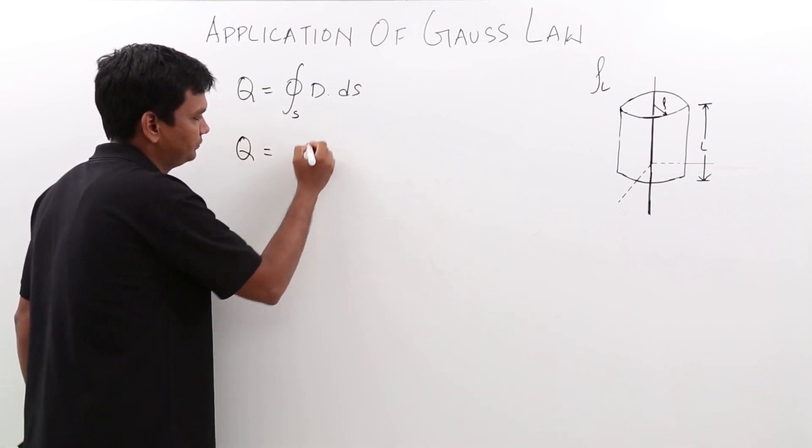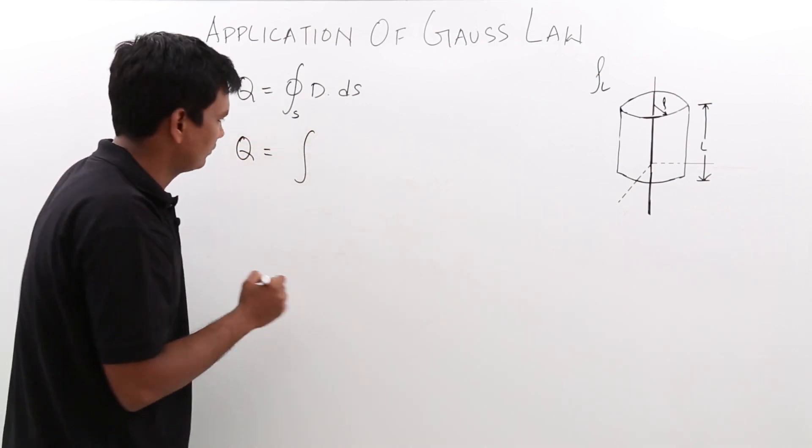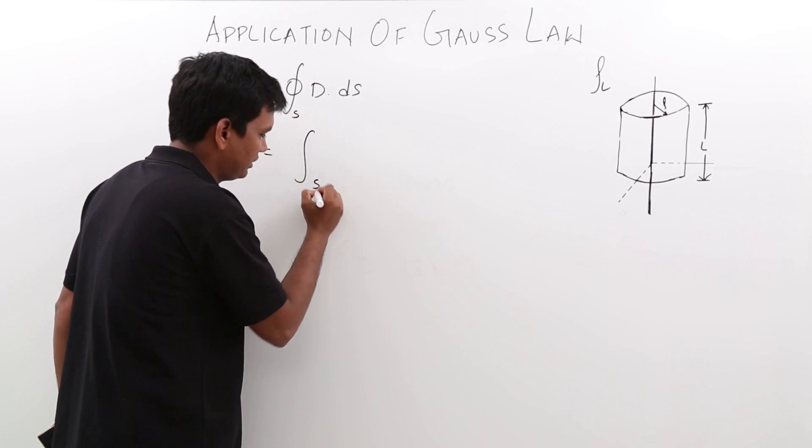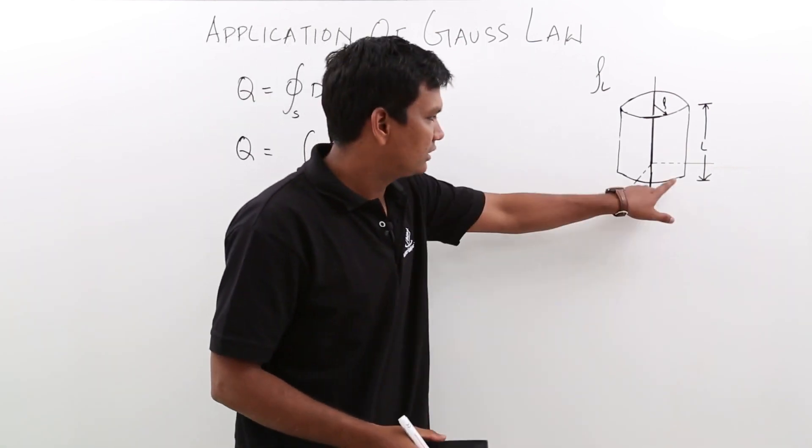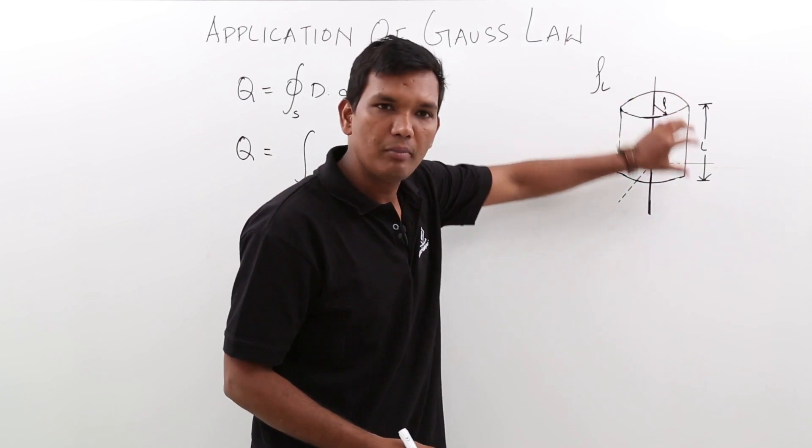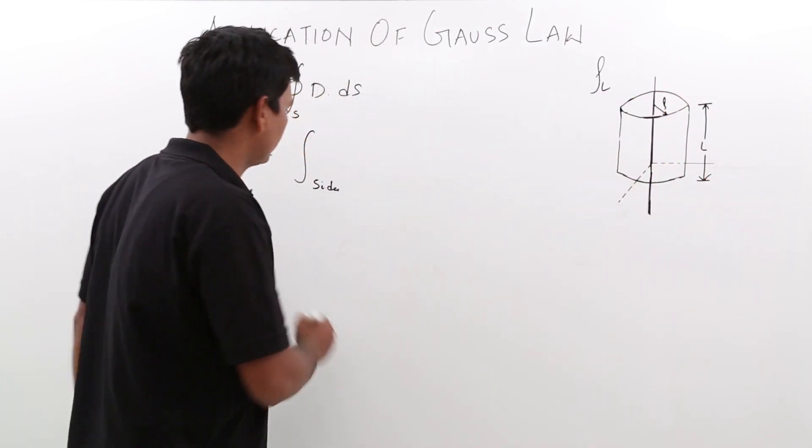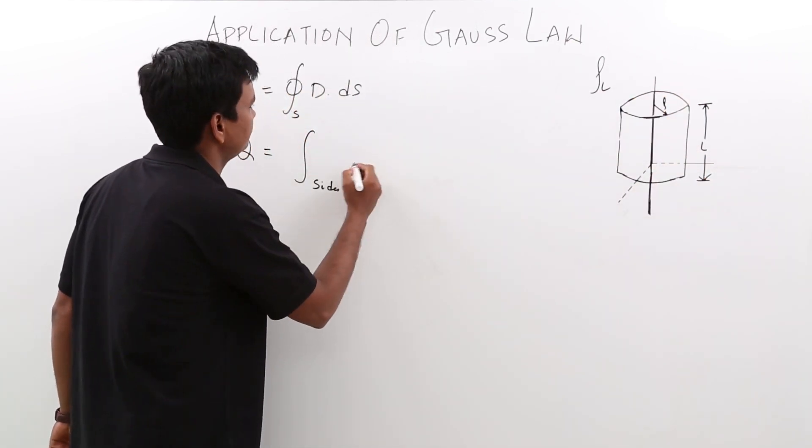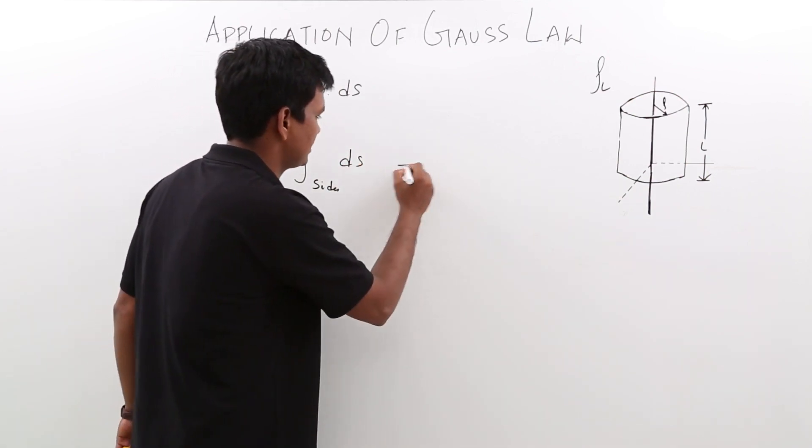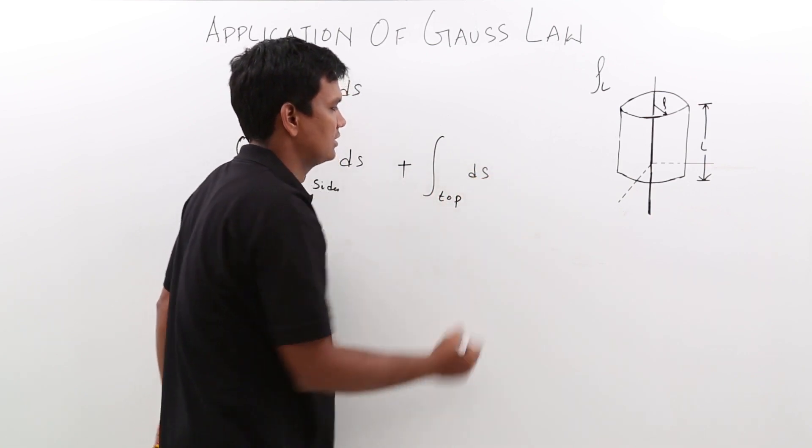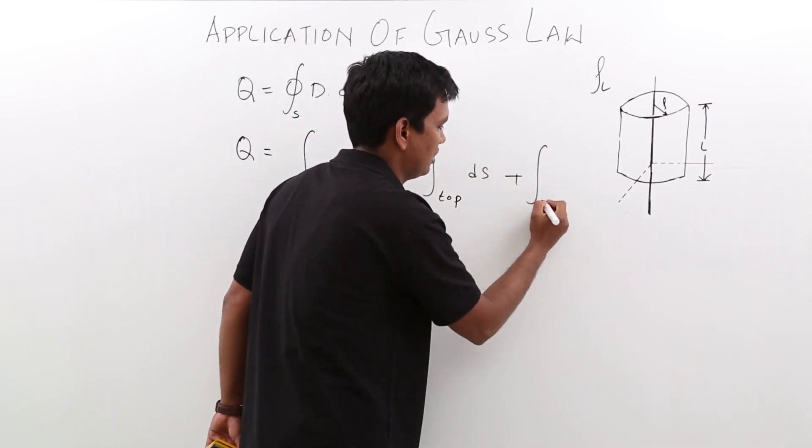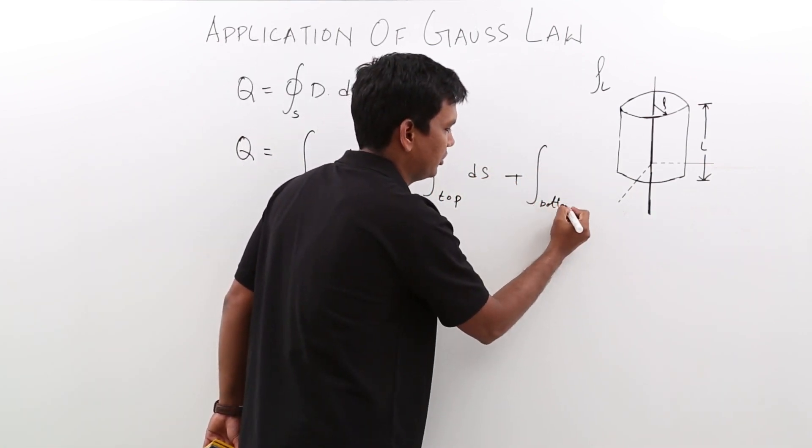So q would be equal to, there should be three sides: there will be a side, there will be a top, and there will be a bottom. We are going to take the integral over one side ds, plus the top ds, plus the bottom ds.